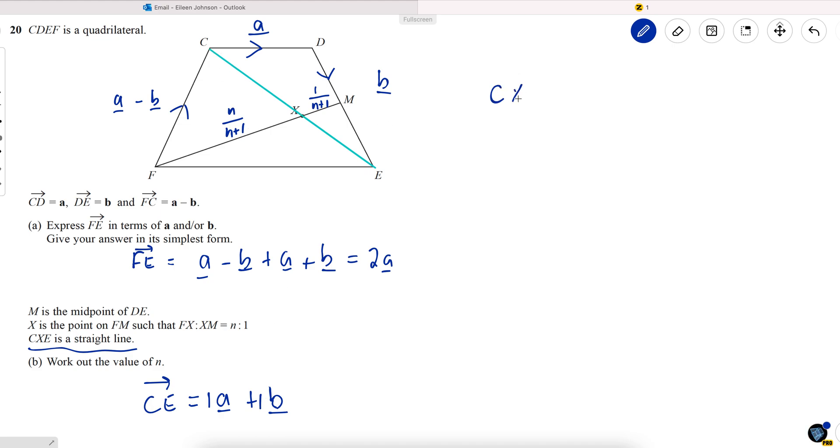First of all, to plan the route, C to X is equal to C to F and then F to X, which is a fraction of F to M. So I'm going to write that straight away as a fraction. The fraction is N of N plus 1 of F to M.